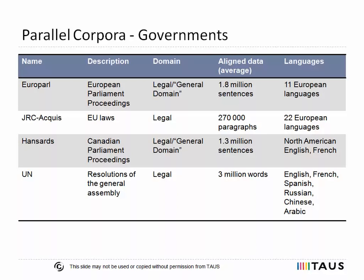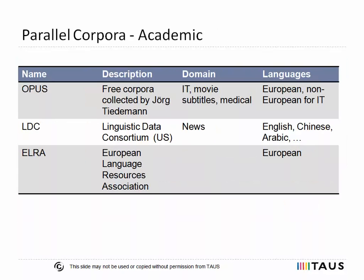Due to different alignment levels, the amount of available parallel data is measured in different units. These units can be number of source or target words, or number of sentences or paragraphs. Some corpora are aligned on the paragraph level, like the AGES Corpus of European Legislation; on the sentence level, like the United Nations Corpus; or provided with a word alignment matrix, like EuroParl.